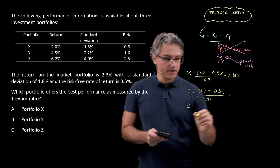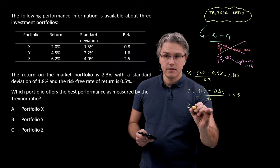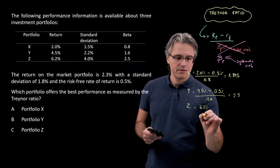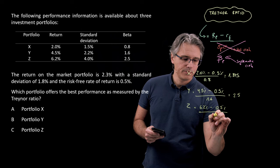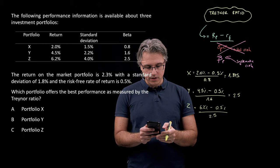And for the third one, for Z, we take the return of 6.2% minus the risk-free rate, which is 0.5, divided by the beta of 2.5. So 6.2 minus 0.5 divided by 2.5—that's 2.28.